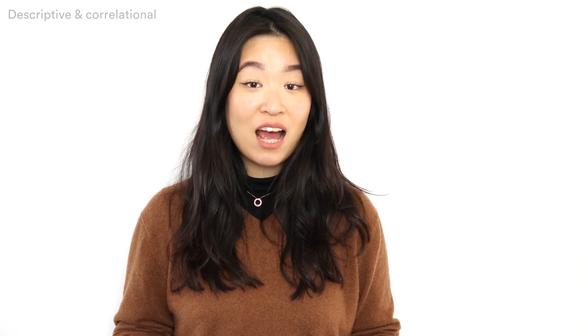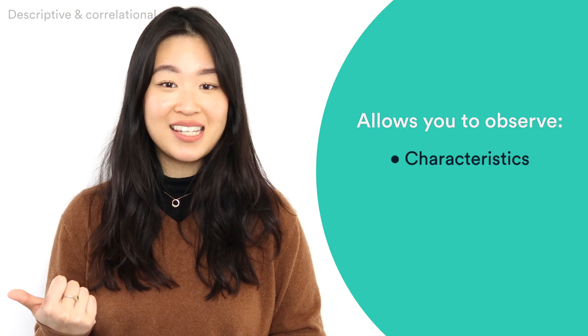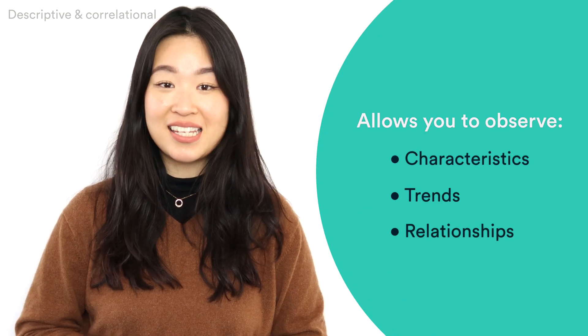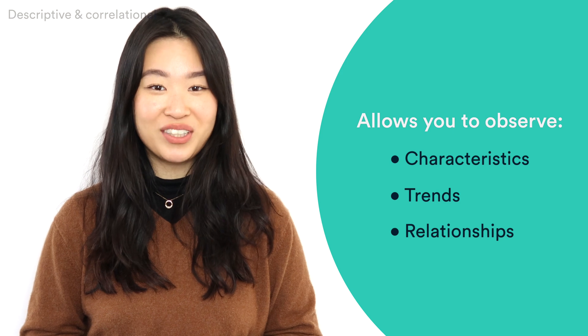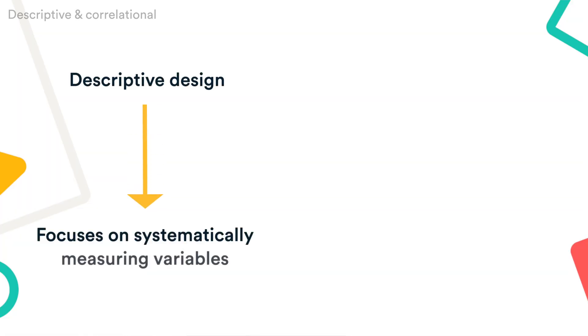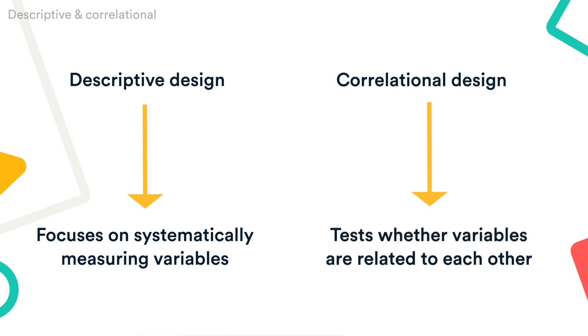In descriptive and correlational designs, you measure variables without influencing them. This allows you to observe characteristics, trends, and relationships as they exist in the real world. A descriptive design focuses only on systematically measuring variables, while a correlational design tests whether variables are related to each other.